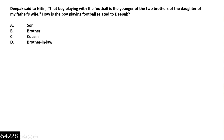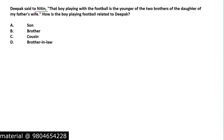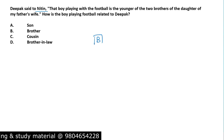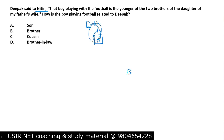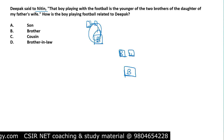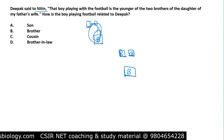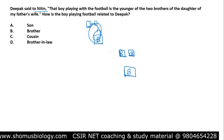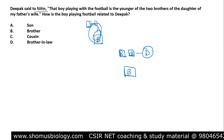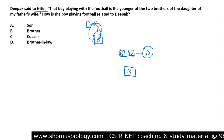Moving to another problem. Deepak said to Nitin: 'That boy playing with the football is the younger of the two brothers of the daughter of my father's wife.' That's a lot of information to process. The boy is male, playing with football, and is the younger of two brothers. We are looking at two brothers of the daughter — so let's build the diagram from 'my father's wife,' which is my mother.